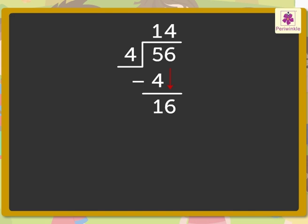Here 16 is completely divisible by four, so we write four above the six. As we know, four into four is equal to 16. We write the number 16 under 16. Finally, 16 minus 16 is equal to zero. Write zero in the ones column.